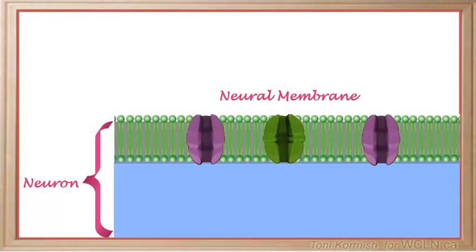Cell membranes surround neurons just as any other cell in the body has a membrane. When a neuron is not stimulated, its membrane is polarized.